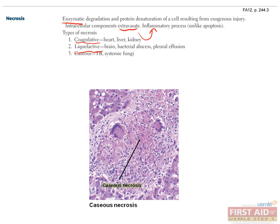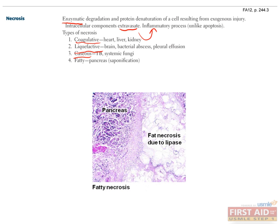Caseous necrosis is particularly important to remember. Luckily, it's also easy to remember because caseous literally means cheese-like, which is exactly what a gross specimen of caseous necrosis looks like. Microscopically, the classic example is a granuloma — organized accumulations of necrotic debris. Typically you would see this in tuberculosis, but it can also happen in systemic fungal infections. Moving on to number four, fatty necrosis happens in pancreatitis, when pancreatic lipase digests surrounding fat, leading to a frothy mix of lipid and water-soluble contents. The word saponification means soap-forming, and the fatty necrosis that occurs is just like the lather from mixing water and lipids in soap.